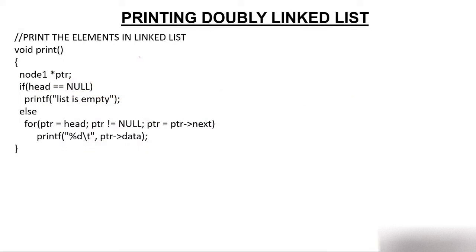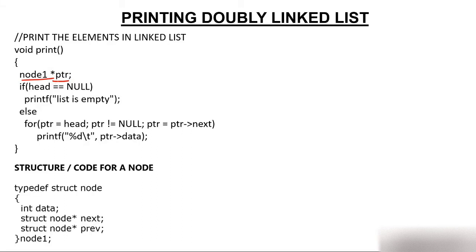So there is a print function. In the print function, I've created a pointer PTR of type node1. PTR is of type node1. Node1 is the structure we created for the linked list — it has three parts: one data and two addresses — one is the address of the next node, one is the address of the previous node. By typedef-ing this structure, the entire structure is represented by node1, simplifying the code.